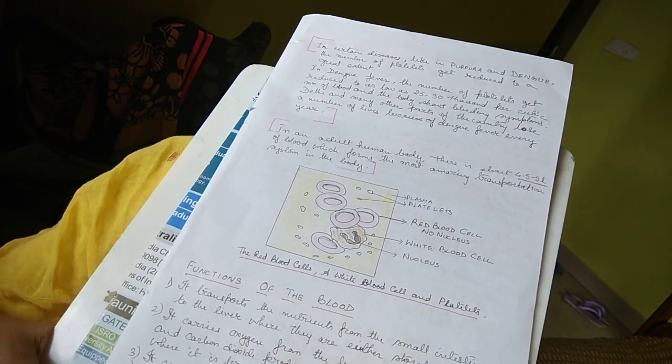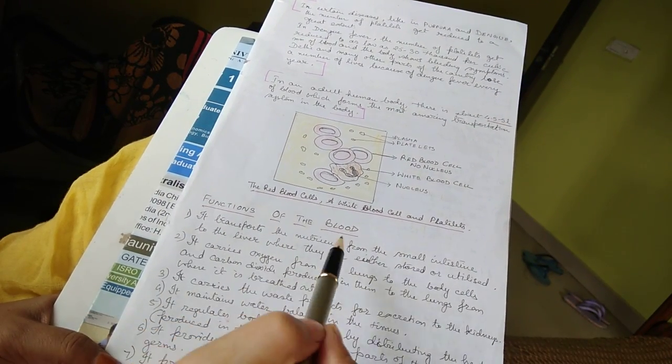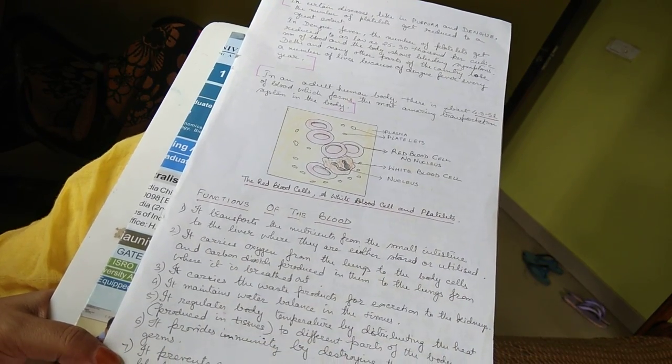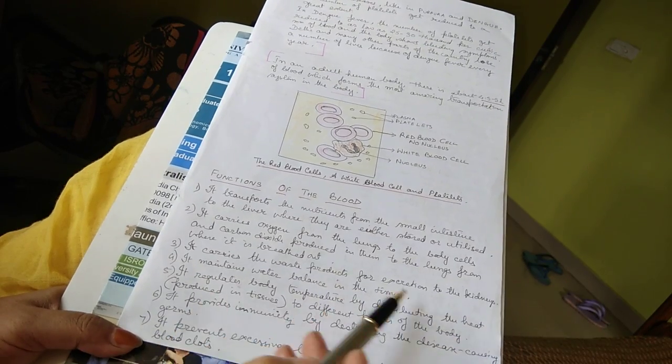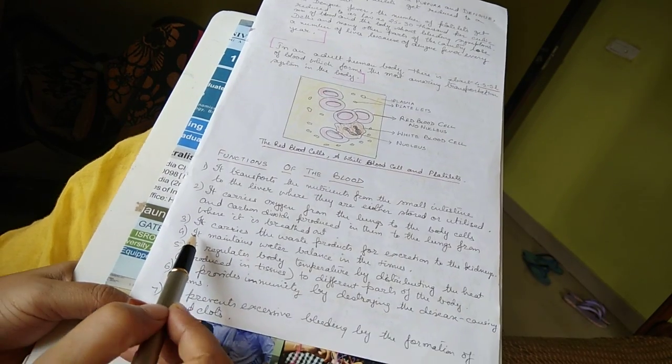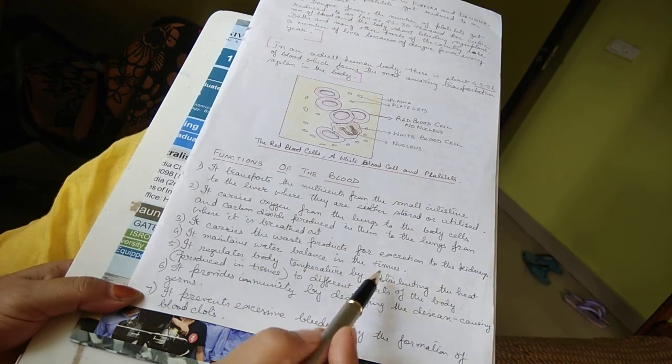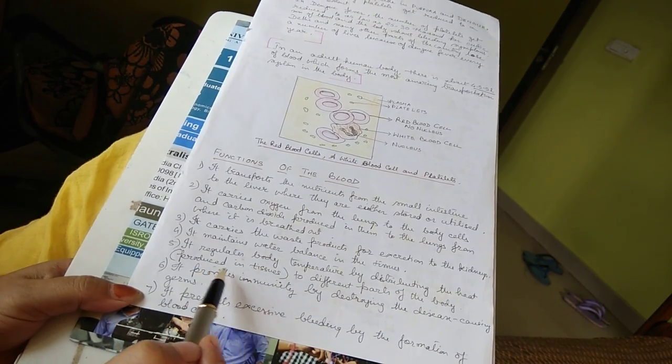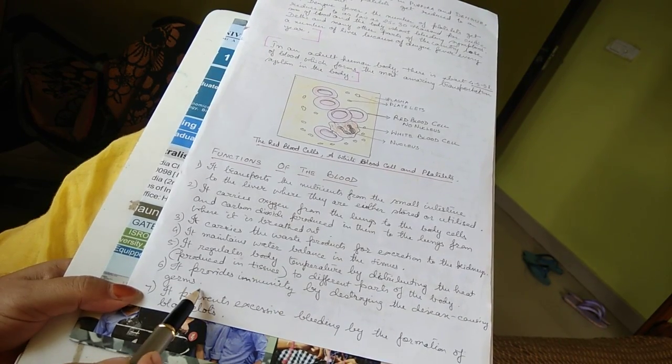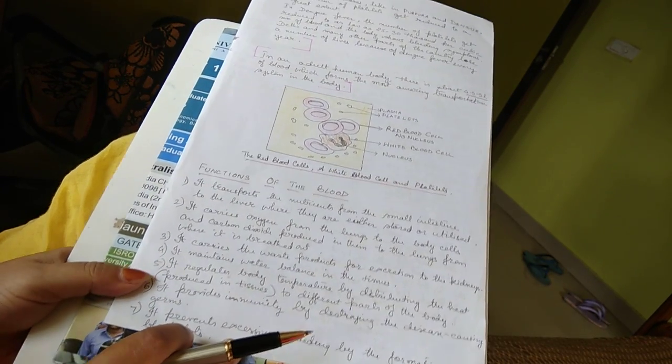Now we come to the functions of the blood. It transports the nutrients from the small intestine to the liver where they are either stored or utilized. It carries oxygen from the lungs to the body cells and carbon dioxide produced in them to the lungs from where it is breathed out. It carries the waste products for excretion to the kidneys. It maintains the water balance in the tissues. It regulates body temperature by distributing the heat produced in the tissues to different parts of the body. It provides immunity by destroying the disease causing germs. It prevents excessive bleeding by the formation of blood clots.